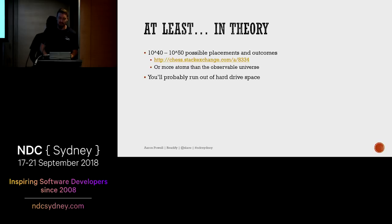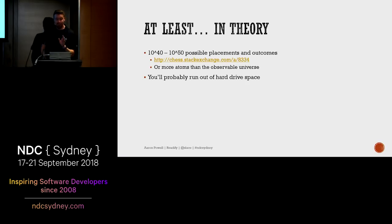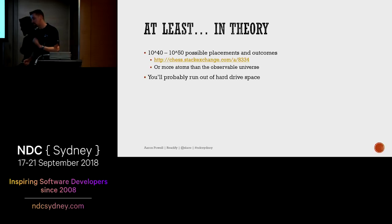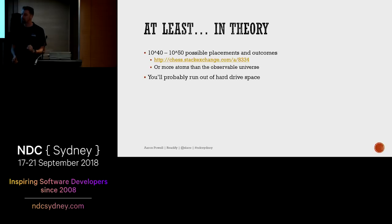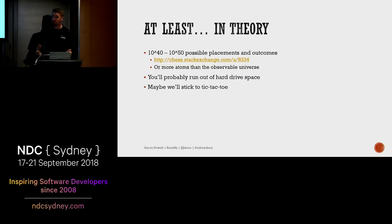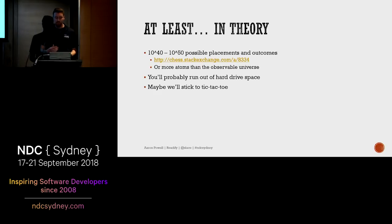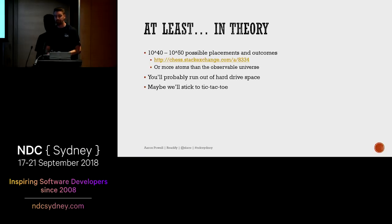I actually sat down with a friend who works at GitHub and explained this to him, and he just looked at me and said 'that is one of the stupidest ideas I've ever heard.' So I decided to go a little bit more simplistic. If I need to be constrained by the number of atoms in the observable universe, what's a slightly more simplistic game? Tic-tac-toe. A three by three grid, only nine squares — probably a little easier to model.